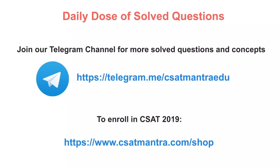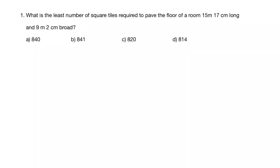What is the least number of square tiles required to pave the floor of a room 15 meters 17 cm long and 9 meters 2 cm broad? Similar questions can be asked in CSAT. This question is based on HCF.